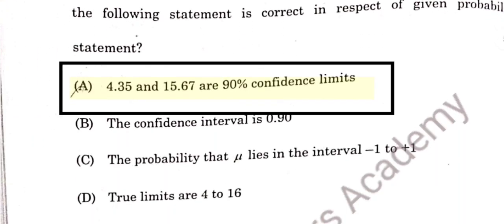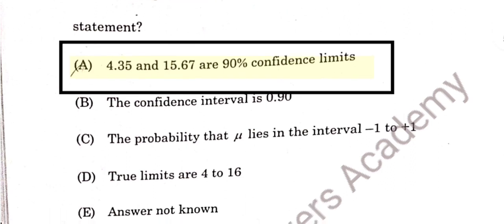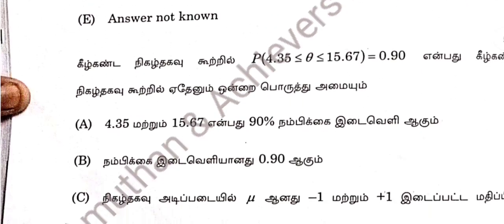Question 57: This is a very basic, standard question. The confidence limits are 4.35 and 15.67, which are the 90% confidence limits. Option A is correct answer for 57.